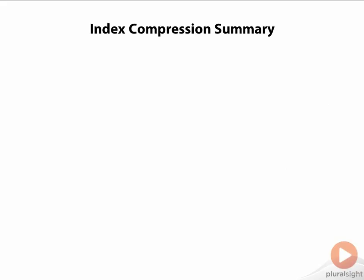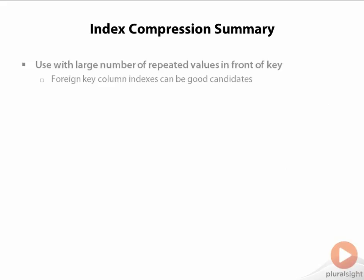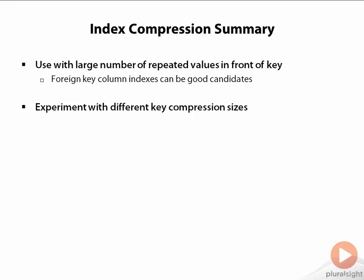To summarize: if you have an index that has a large number of repeated values at the front of the index key, consider index compression. Indexes on a foreign key column can be a good candidate for index compression, because by the very nature of the one-to-many relationship, you have a lot of repeated values in the child table. In any case, what you'll want to do is try out different key compression lengths and measure the impact on performance — what you are likely to find is a performance boost at the same time.